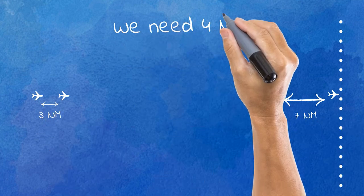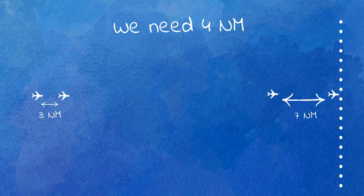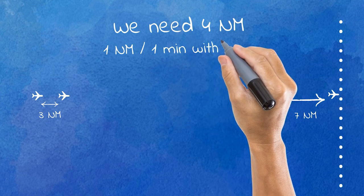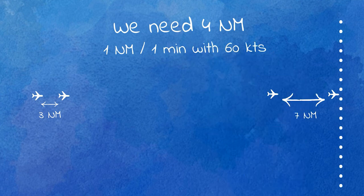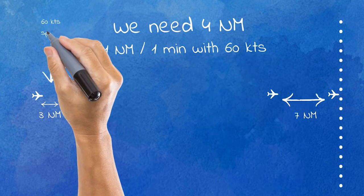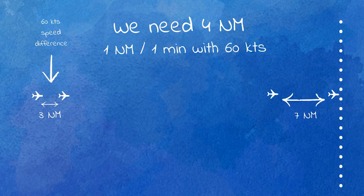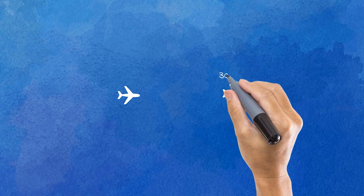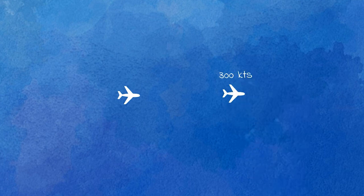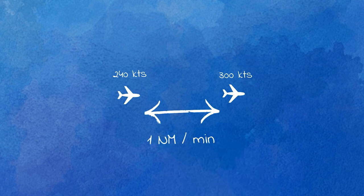We're four miles short. How do we gain that extra gap? With speed difference, of course — and now we need that magic number: one nautical mile, one minute, with a speed of 60 knots. We need a speed difference of 60 knots between the two aircraft to gain one nautical mile per minute. With some quick math, we instruct the first aircraft to fly at 300 knots and the second at 240 knots. With these speeds assigned, the gap will increase at a rate of one mile per minute, and in four minutes we will have our desired four miles of extra gap.